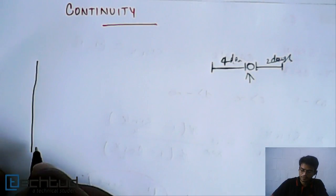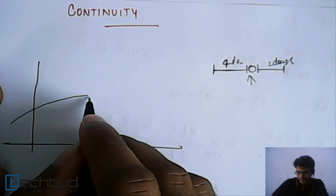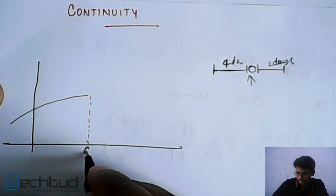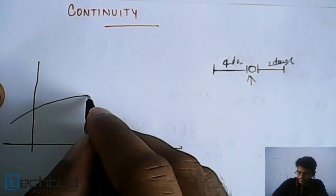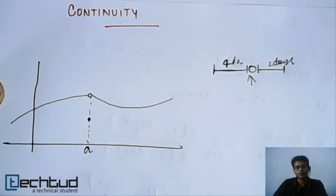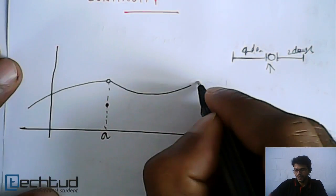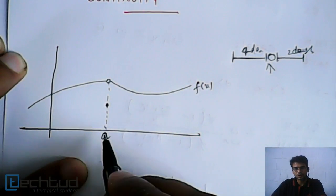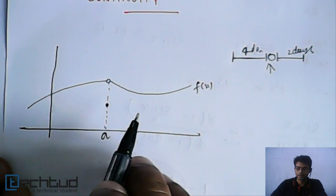Similarly, for a function — if a function is defined such that it has some value, but at a particular point, let's say 'a', the value is something else, and then after this point it has a different value — this curve of the function f(x) is continuous except at point 'a'. Since it is not continuous at point 'a', we cannot say this is a continuous function. It has a break.